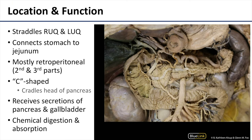Like the stomach, the duodenum straddles both the left and the right upper quadrants, although the duodenum is more in the right upper quadrant than it is the left upper quadrant. As part of the gut tube, the duodenum connects the stomach with the jejunum. The jejunum is a continuation of the small intestine of which the duodenum is a part.